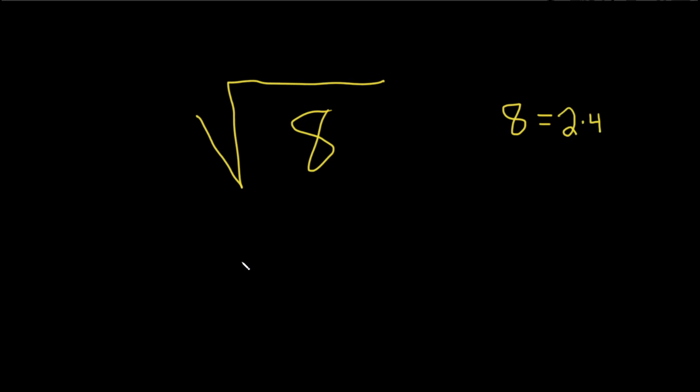So this will be the square root of 2 times 4. And now we can take the square root of each piece. So this is the square root of 2 times the square root of 4. And the square root of 4 is 2.